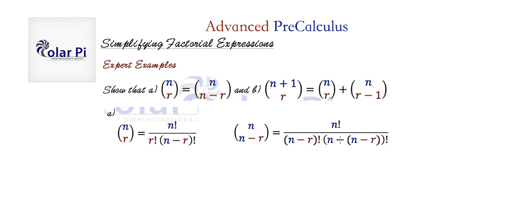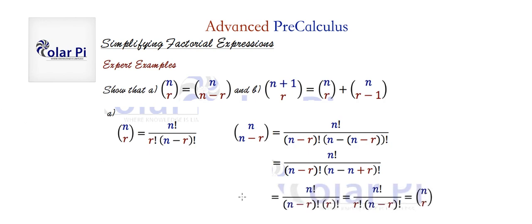Next we distribute the minus sign, and if we do, we're going to be able to simplify. Clearly n minus n is zero, and then plus r is just r. So we're basically done with the first property — giving an algebraic proof — because this simplifies to the original n choose r expression. In the denominator, if you insist on making this look exactly like the original, you can swap the terms, because multiplication commutes.